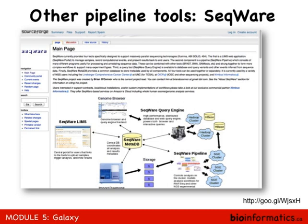At the OICR, we use a pipeline tool called SeqWare, which is less user-friendly and more command-line driven, but it is a pipeline tool in the sense that it writes a metadata file and keeps track of all our pipelines and arguments so that we can reproduce them. More importantly, it allows us to automate — so if we've got a thousand samples to rerun, we can do it.